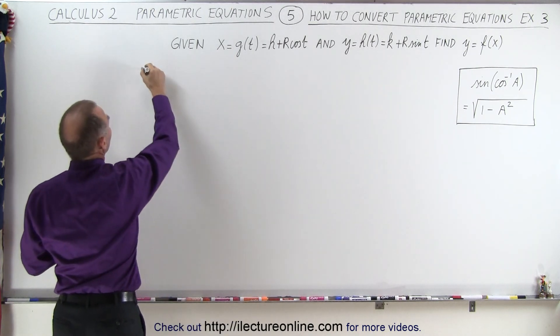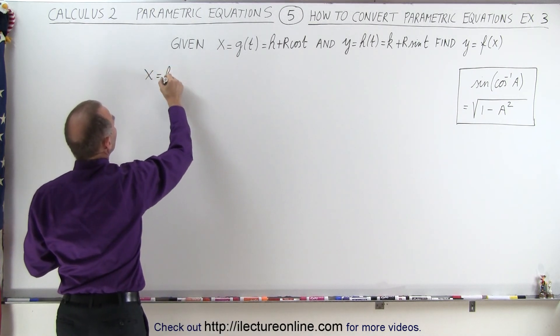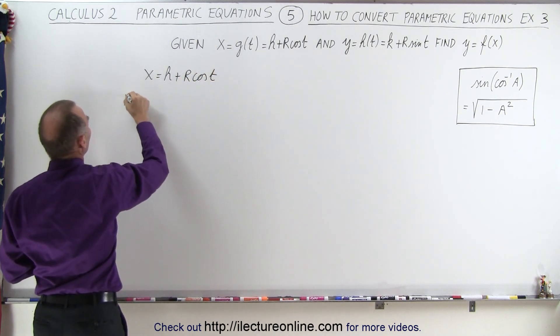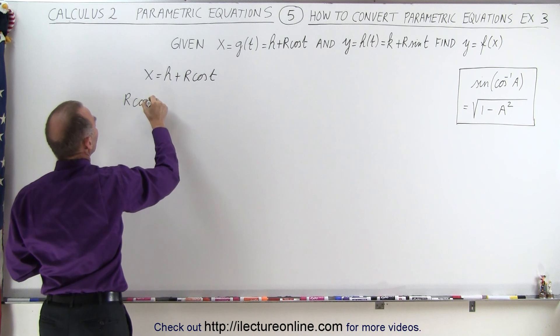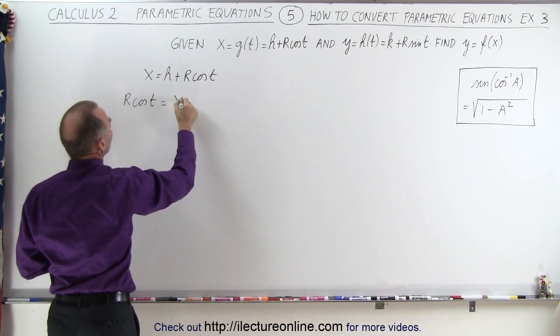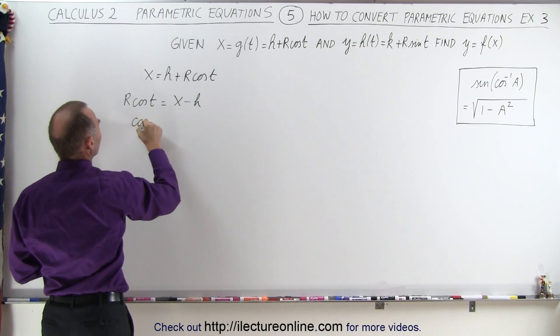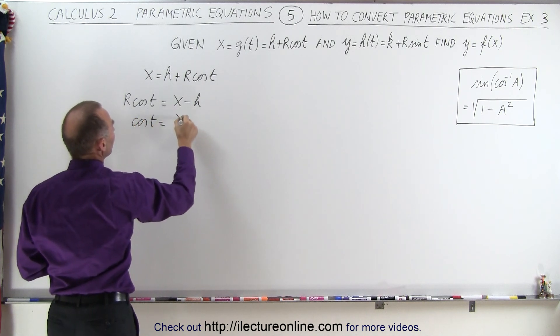So starting with X equals H plus R times the cosine of T, we can then write that R times the cosine of T is equal to X minus H. Now we divide both sides by R, so we get the cosine of T is equal to X minus H divided by R.